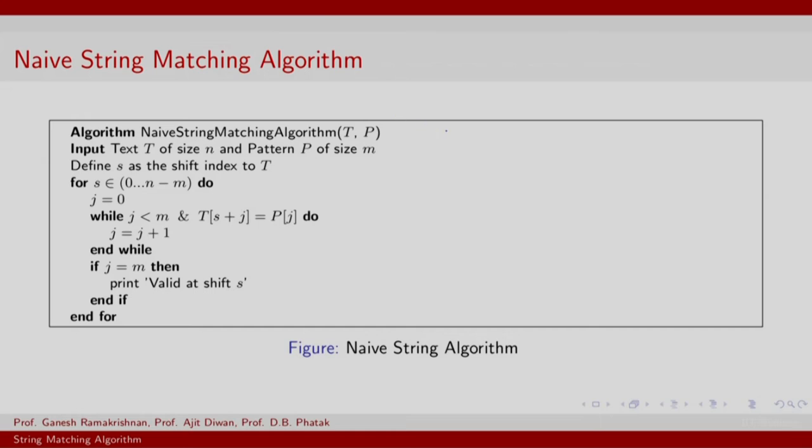This is the naive string matching algorithm that we just illustrated given a text T of size N, pattern P of size M. You keep track of the shift index S at every point of time. The shift index S is what you preserve into the text. The pattern P at this instance of time will be scanned starting from this position S. For S ranging from 0 to N minus M, we are interested in matching the entire pattern. S will be restricted to number of positions in the text T minus the number of positions in the pattern P.